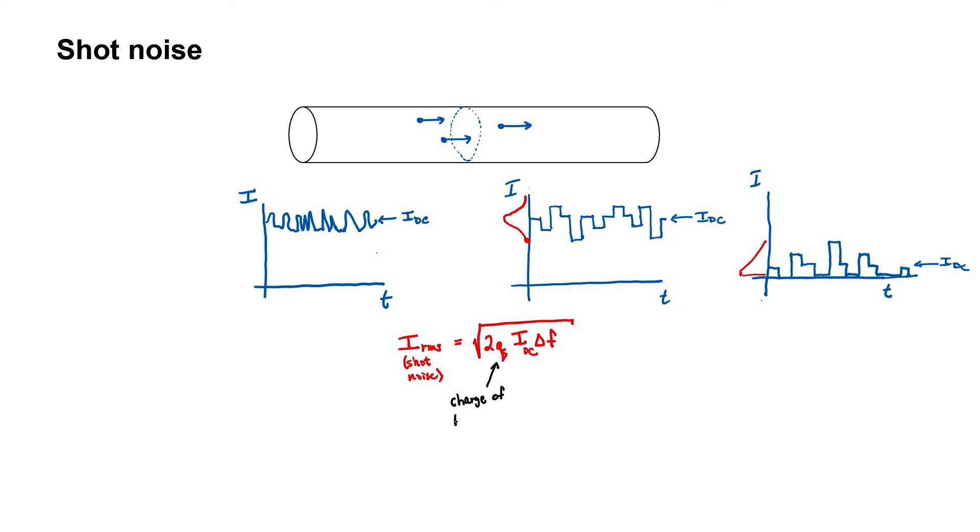It depends on the charge of a single electron, Q, the average current, or IDC, and the bandwidth, which I'm calling here delta F.